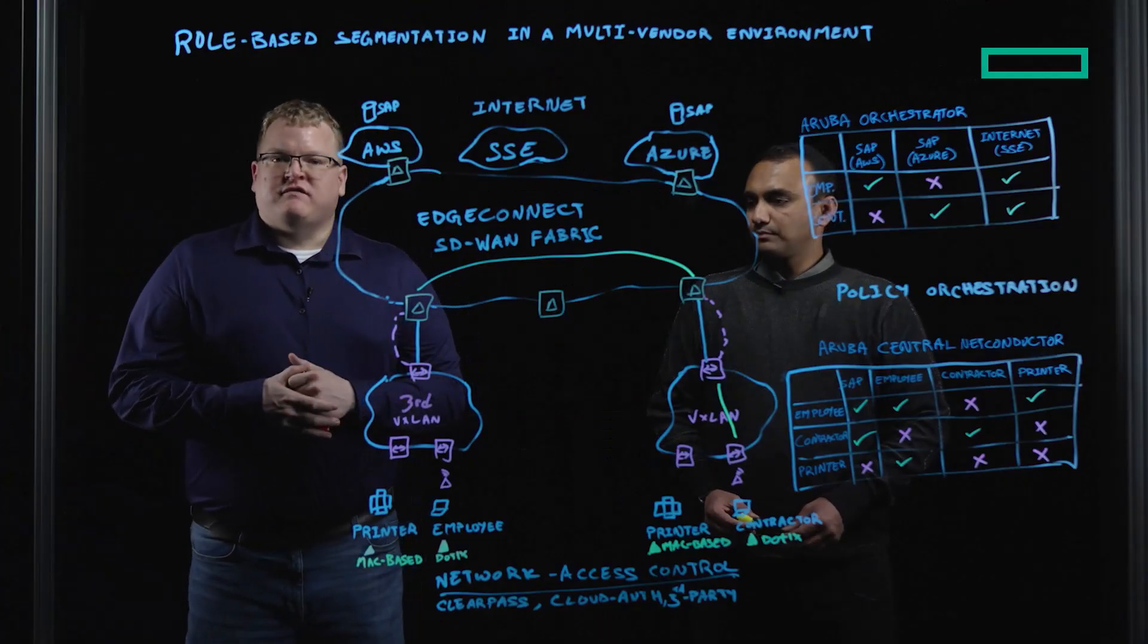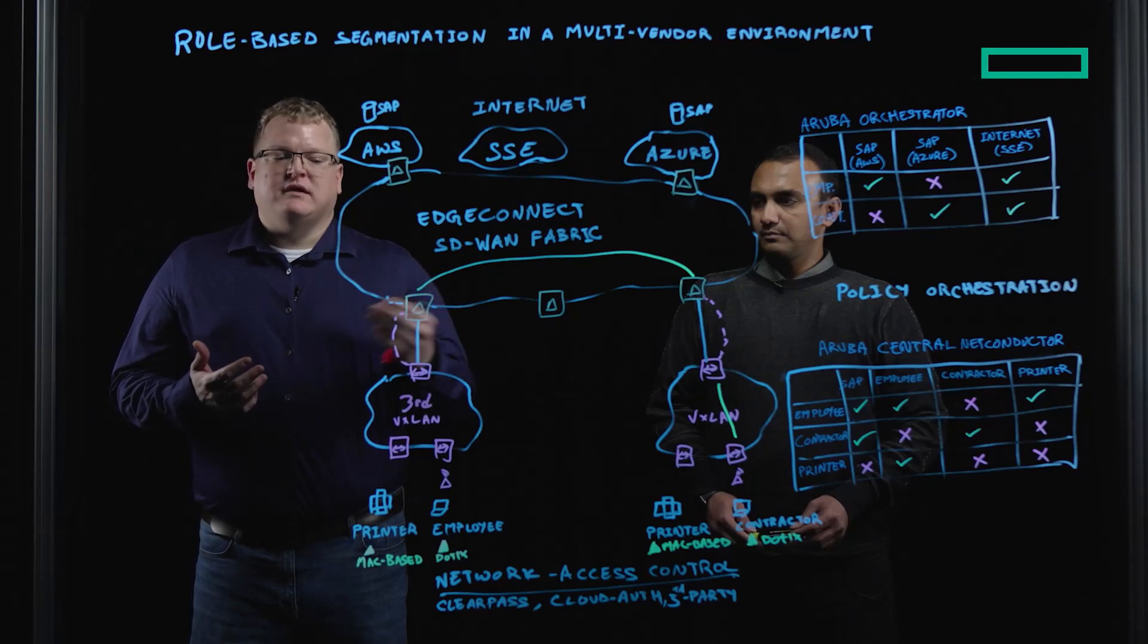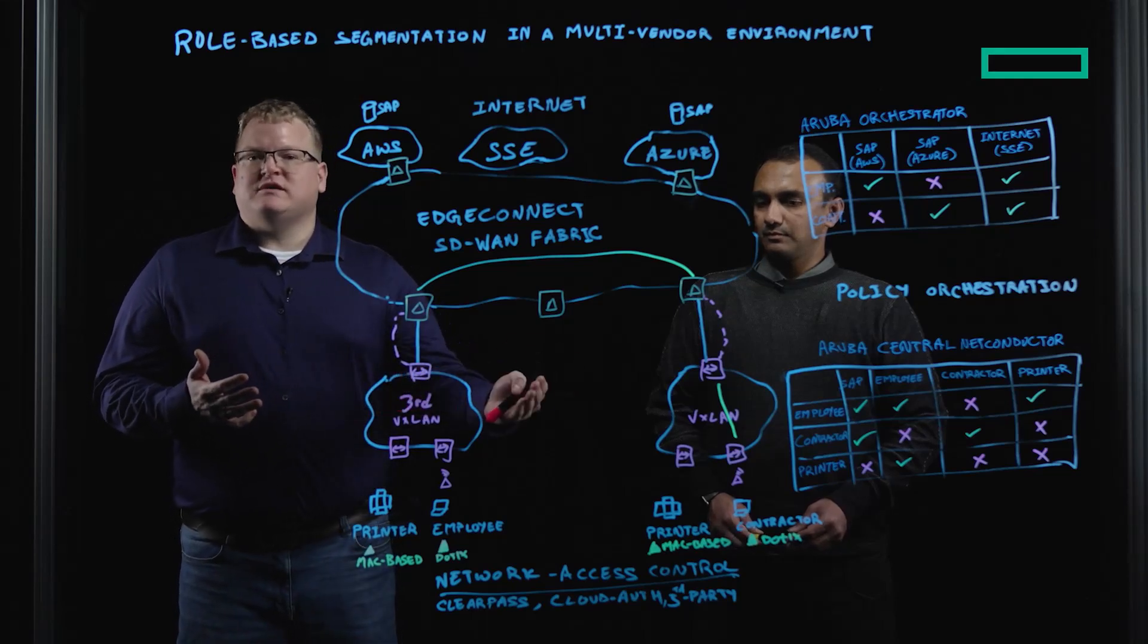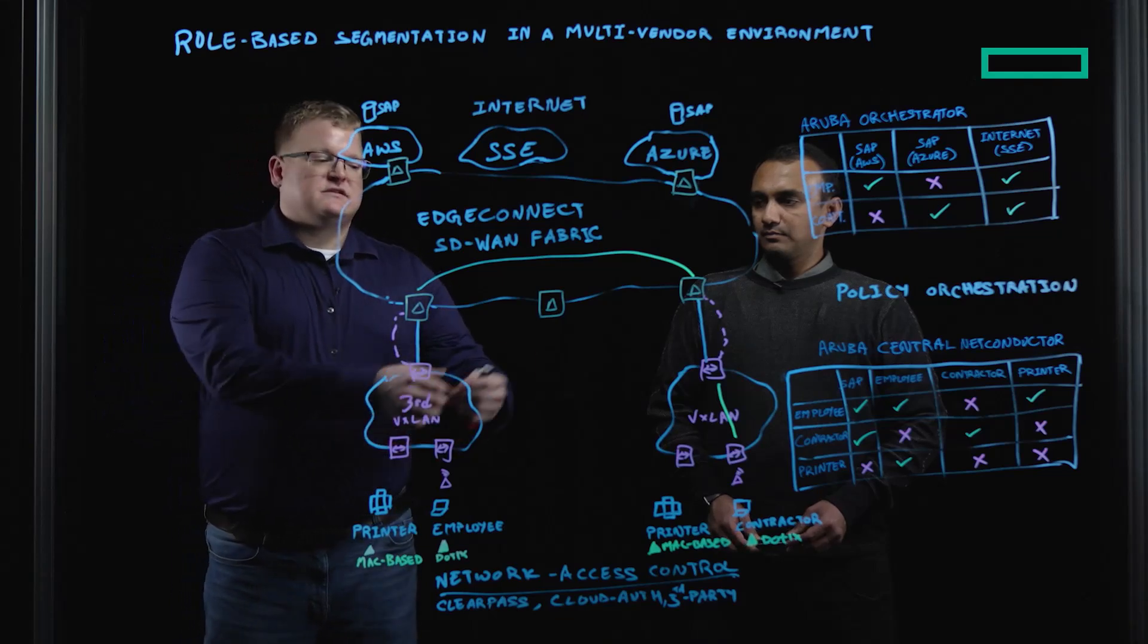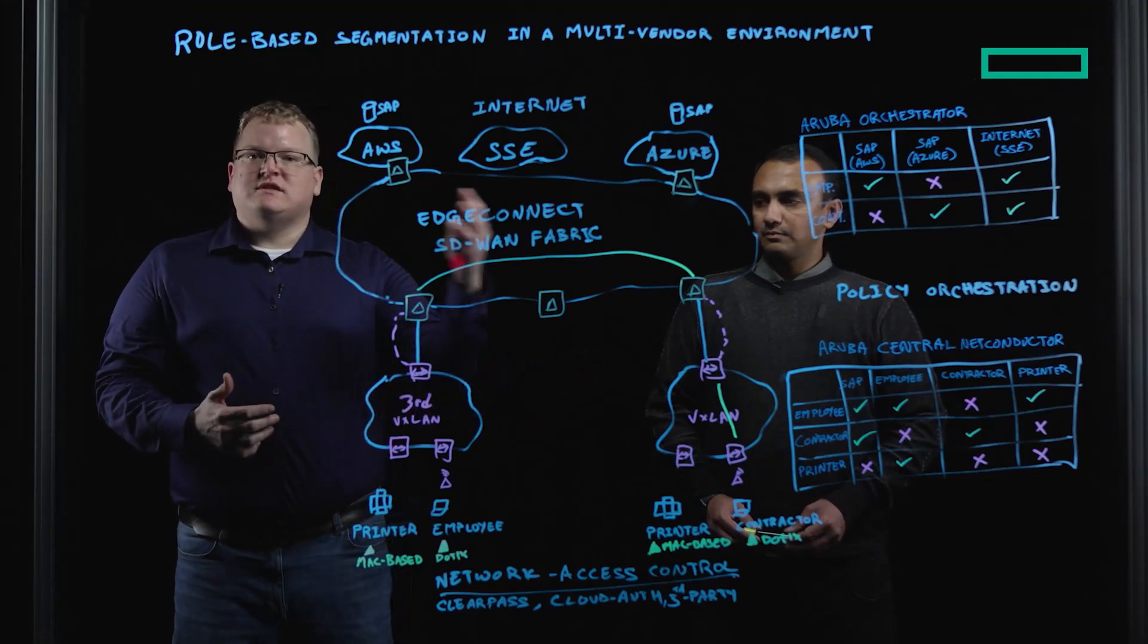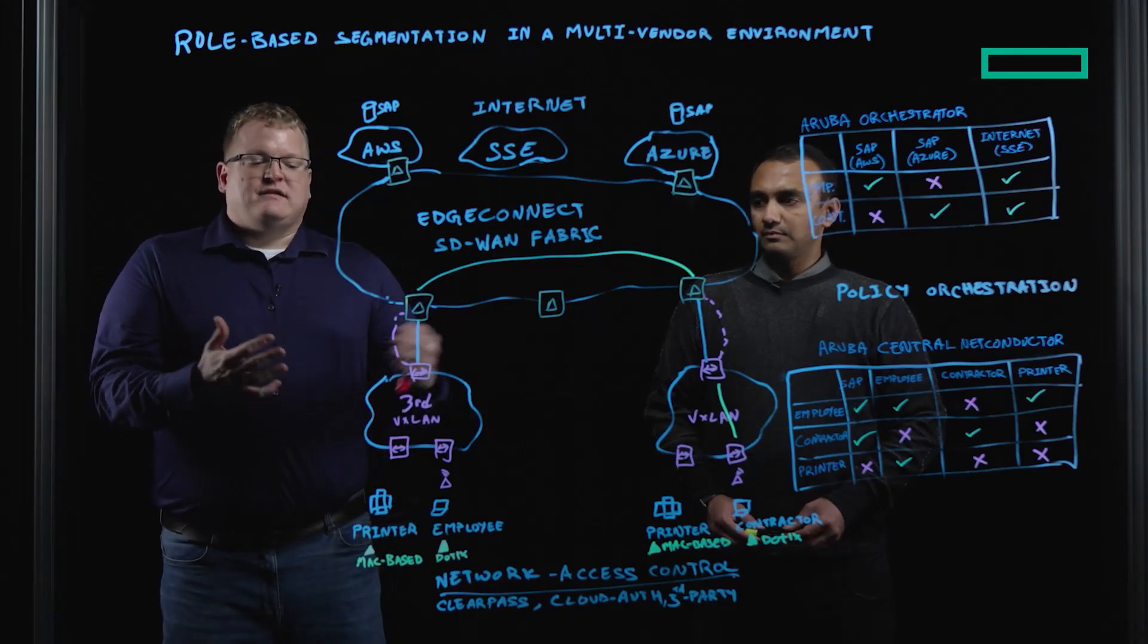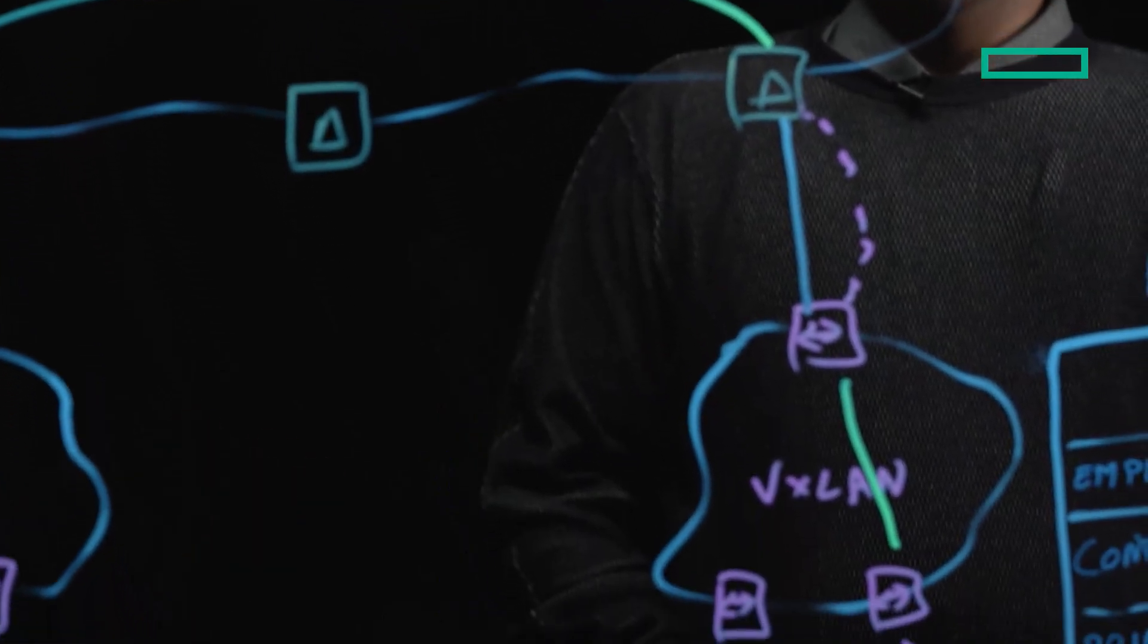Because the EdgeConnect SD-WAN fabric carries that role information natively in the data plane, it is able to maintain that end-to-end role segmentation between vendor VXLAN-based fabrics. As long as the role information configured in this fabric is the same as the role information configured in that fabric, the EdgeConnect SD-WAN is able to normalize that role information across the fabric in the data plane. This ensures that we're able to provide that end-to-end role-based segmentation, even in a multi-vendor scenario such as this.